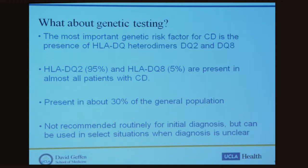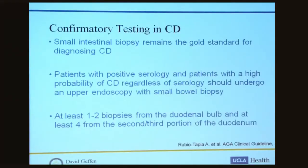An example where genetic testing is useful is a patient who is already on a gluten-free diet and wants to be tested definitively for celiac disease. It's important to note that all serologies — including tissue transglutaminase and others — must be done on a gluten-containing diet; if the patient is already on a gluten-free diet, these tests are useless. Once you have a positive serology, the diagnosis must be confirmed by small intestinal biopsy, which remains the gold standard. Patients with positive serology or a high probability of celiac disease should undergo upper endoscopy with small bowel biopsy — at least one to two biopsies from the duodenal bulb and at least four from the second and third portions of the duodenum.